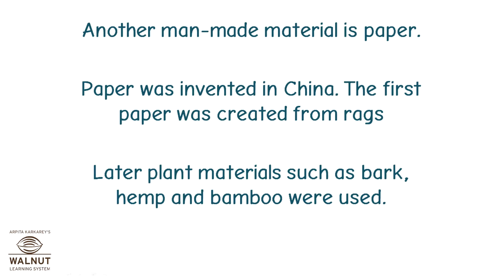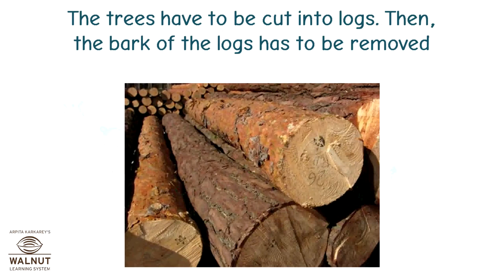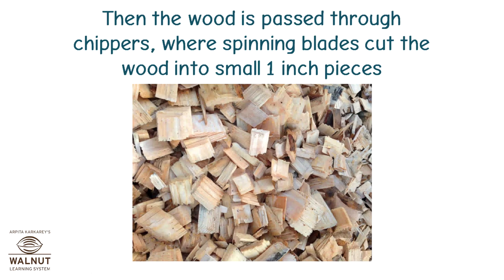The first paper was created from rags. Later, plant materials such as bark, hemp, and bamboo were used. Paper is usually made from trees that have softwood, like pine or fir. The trees have to be cut into logs, then the bark of the logs has to be removed. Then the wood is passed through chippers where spinning blades cut the wood into small one-inch pieces.